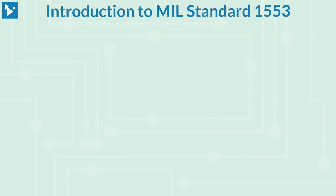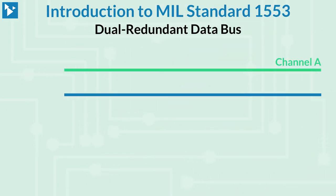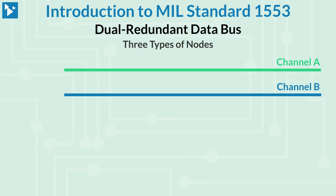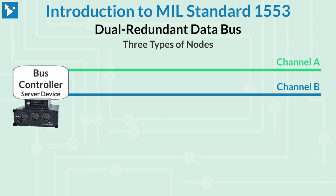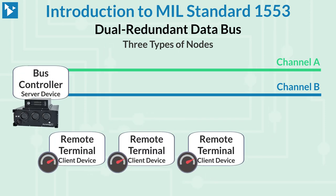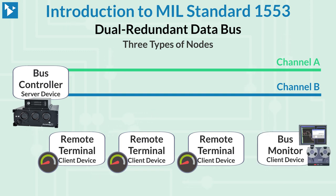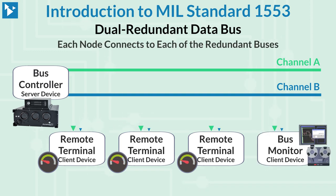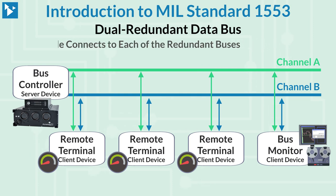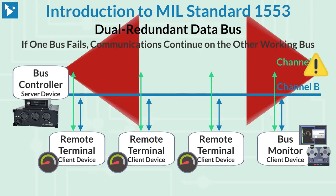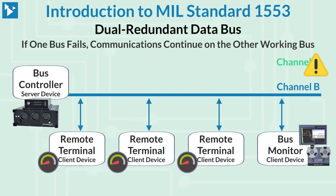MIL-STD-1553 is a dual redundant data bus with three types of nodes. The first node is a bus controller, the second type is a remote terminal, and the third type is a bus monitor. Each node is connected to each of the redundant buses, so if one of the buses should fail, communications can continue on the other working bus.